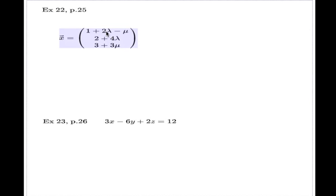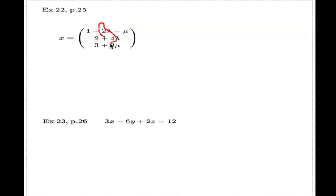Two vectors can be easily extracted from this equation. The position vector a will be (1, 2, 3). The first directional vector b is composed of the coefficients next to lambda, so it's (2, 4, 0) — lambda is missing in the third component. The last vector has mu coefficients: mu is missing in the second component, so it's (-1, 0, 3).